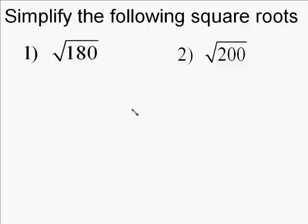The following problems are examples of simplifying square roots using the factor method. To do this, we're going to factor 180 into a product of prime numbers. The factor tree is the most common method to do this.